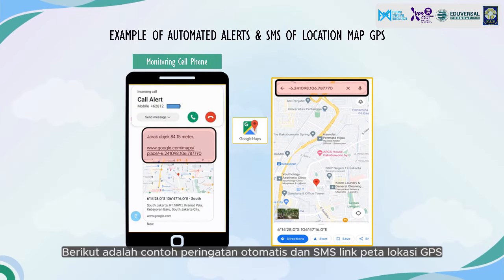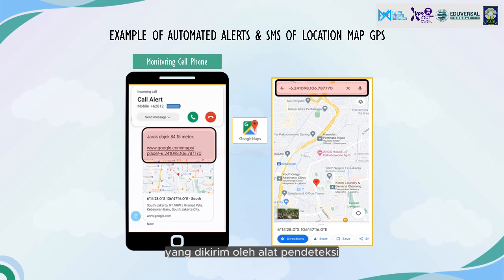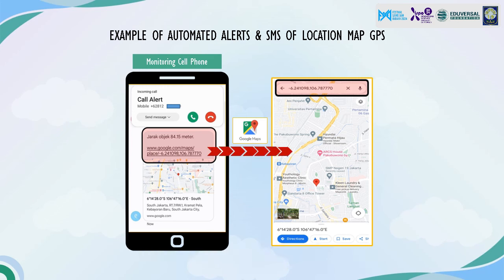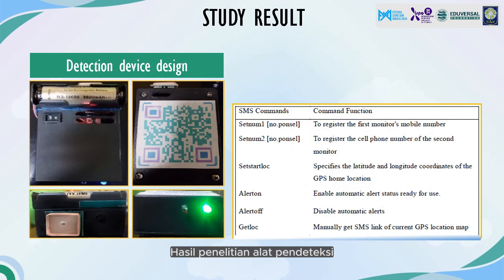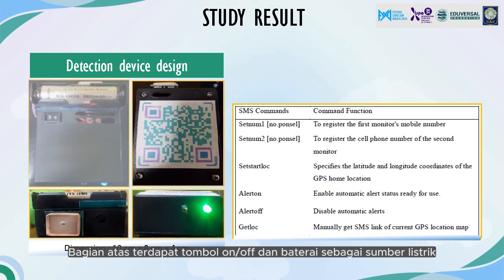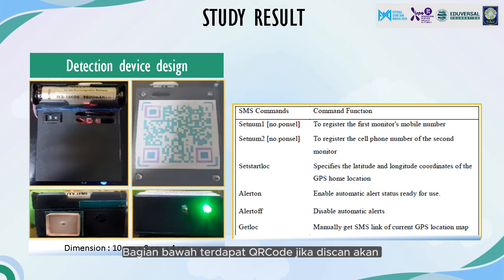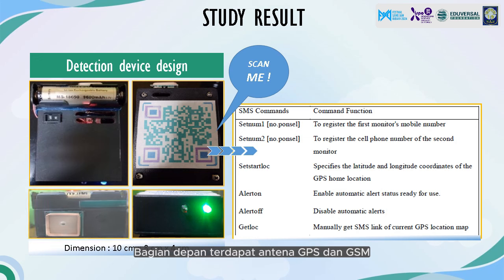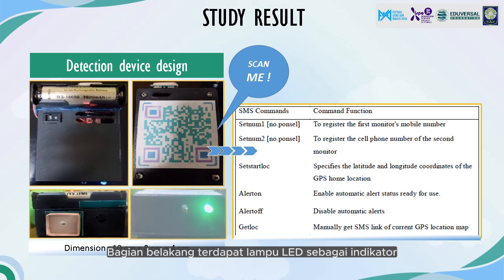Here is an example of the automatic alert and SMS link GPS location map sent by the detector. The location map link can be opened on Google Maps. The research design of the detector: the top has an on/off button and battery for power; the back has a QR code which, when scanned, displays the SMS command guide; the front has GPS and GSM antennas; and the back also has an LED light as an indicator.